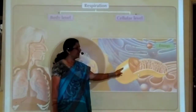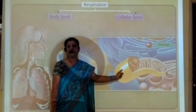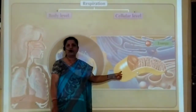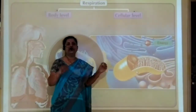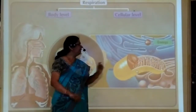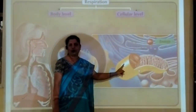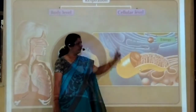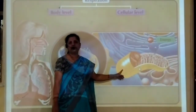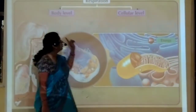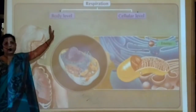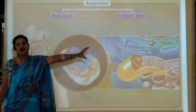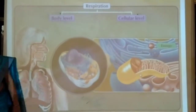In every cell of the body, there are mitochondria, which are called the powerhouse of the cell. Power means energy. Energy is actually released in the mitochondria, and this step takes place at the cellular level, which occurs in the mitochondria. Now we will see in detail how respiration occurs at the body level and at the cellular level.